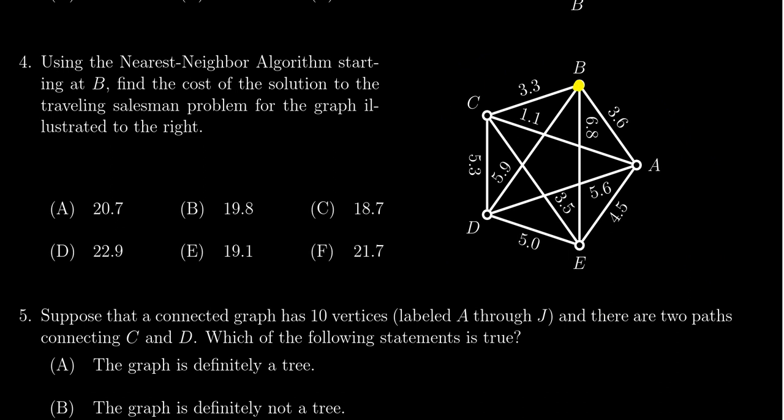So that's what we're going to do. We're going to start at B and look at who's the nearest neighbor to B. Going to C would be 3.3, going to D would be 5.9, going to E would be 6.8, and going to A is 3.6. C is the nearest neighbor right there, so we're going to go to C next.